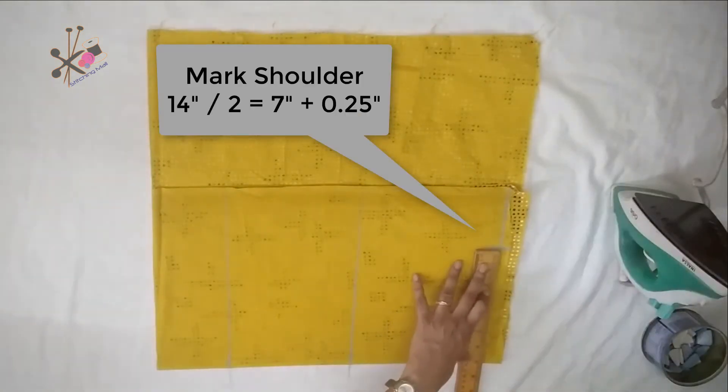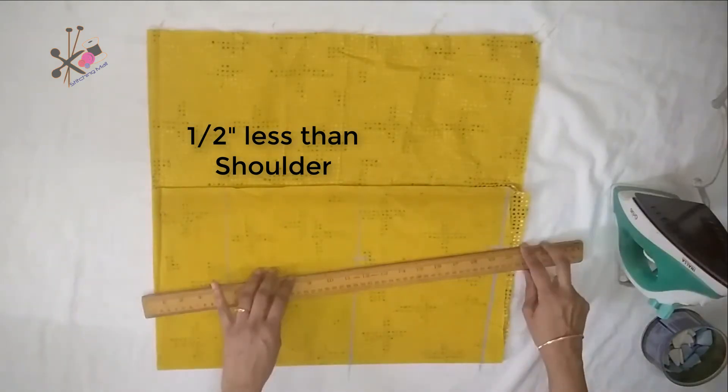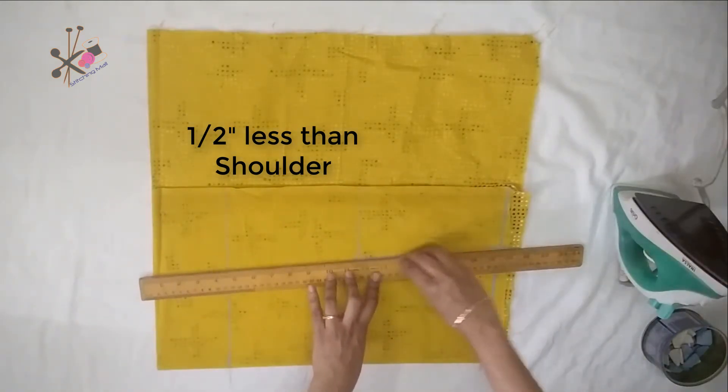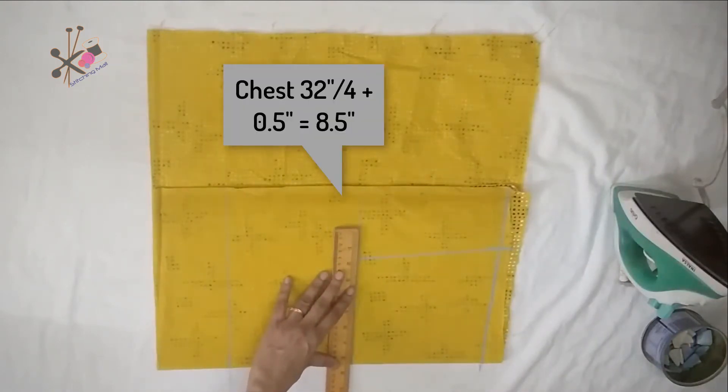The average shoulder of a person is 7 inches. That is half of shoulder. Maximum is 15 inches, so you can make it seven and a half. Then mark as I've mentioned - the formulas on chest line take half inch lesser than the shoulder.